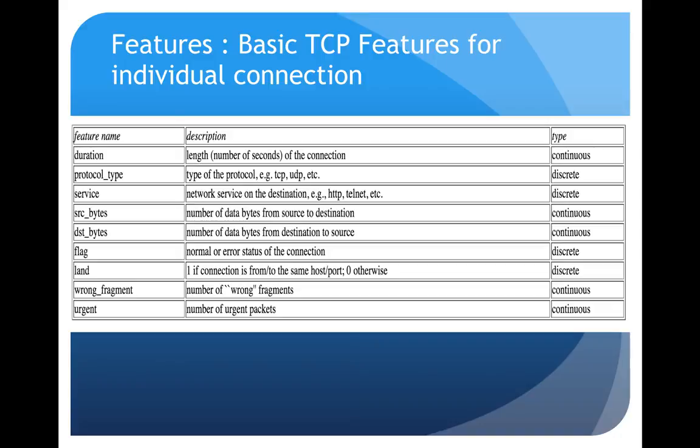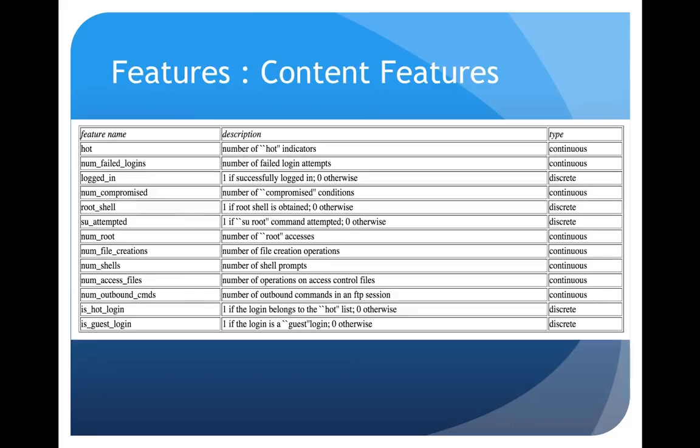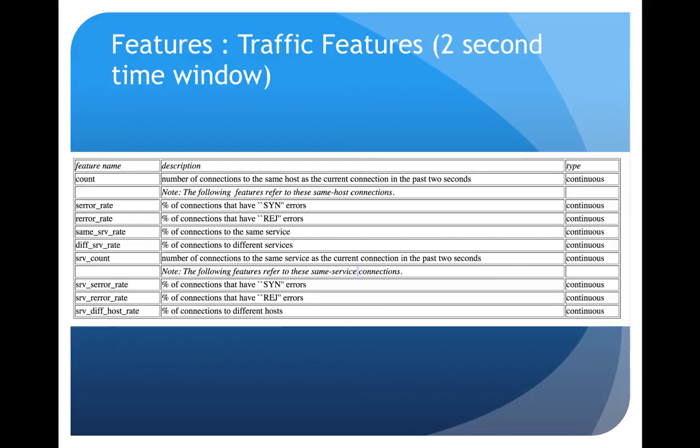Every record in both the datasets has about 41 features. These features can be grouped into three categories: first is basic TCP features like duration, protocol type, or service; content features like whether the user is logged in, how many failed logins has the user had; and traffic features like error rate.